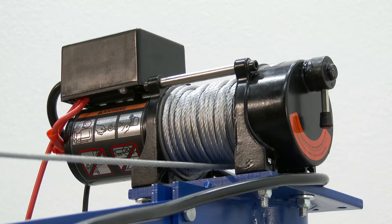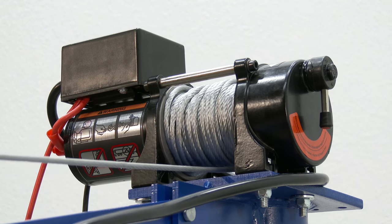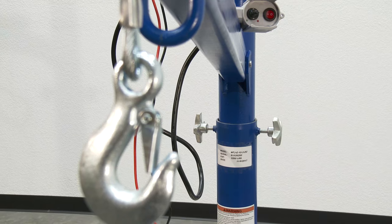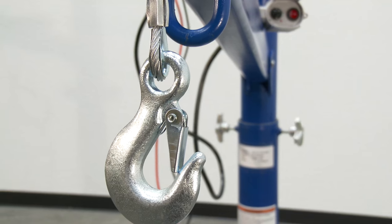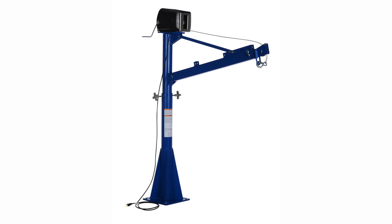DC models include 46 feet of 3/16-inch aircraft-grade wire rope with swivel hook and safety latch. AC units feature 25 feet of 7/32-inch cable.